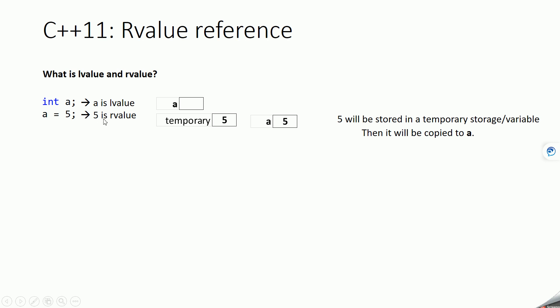In this case, `a` is an l-value and 5 is an r-value. L-value means a memory location that can be identified by a name. R-value means a temporary storage that you cannot identify by some name. Whenever you want to use `a` later, you can — but for the memory allocated for 5, you cannot use it later because there is no name to identify that temporary location.